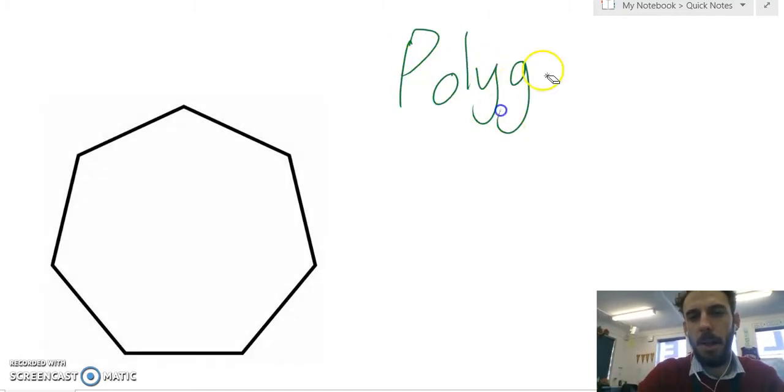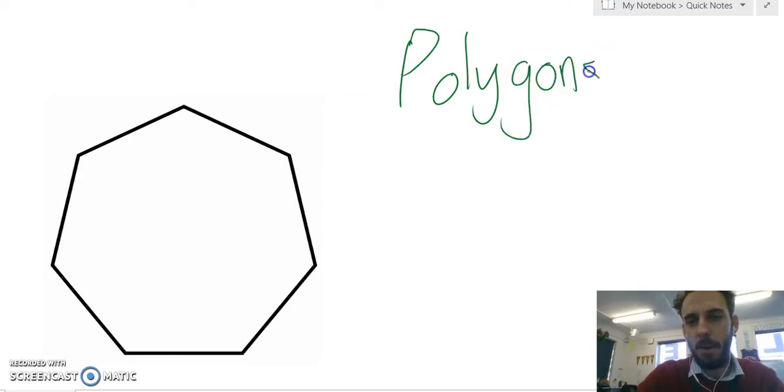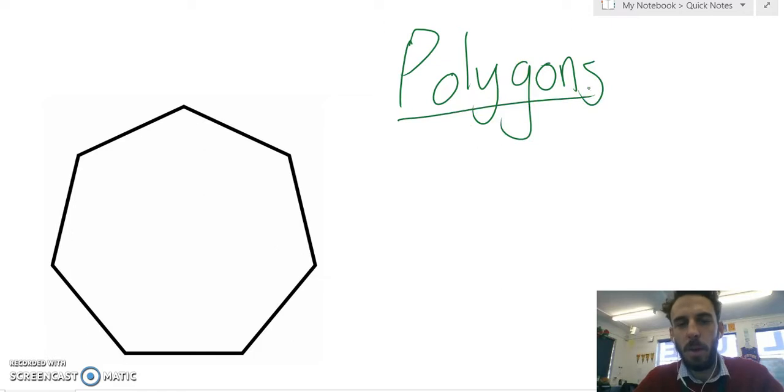When we talk about polygons, we are referring to any full shape. So a shape where all the lines draw up. So technically a triangle is a polygon, technically a square is a polygon, and we go right up. We normally start to use the word polygons though, when we refer to a shape that's got five or more sides.